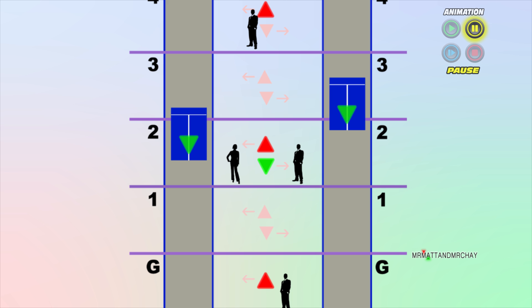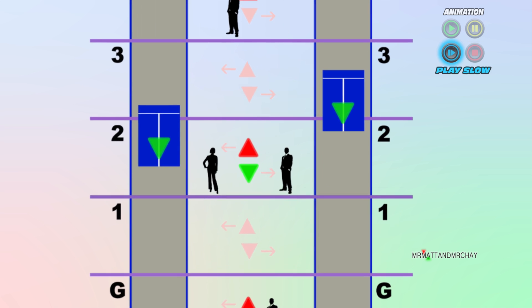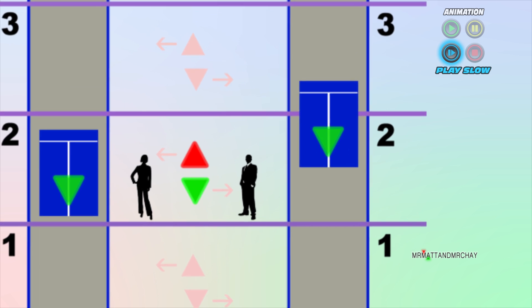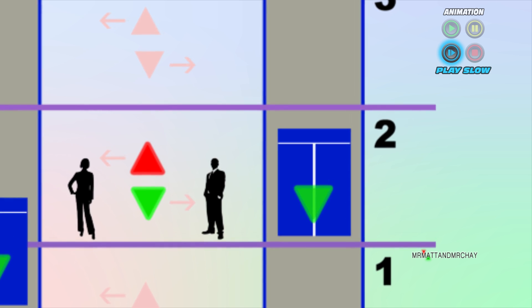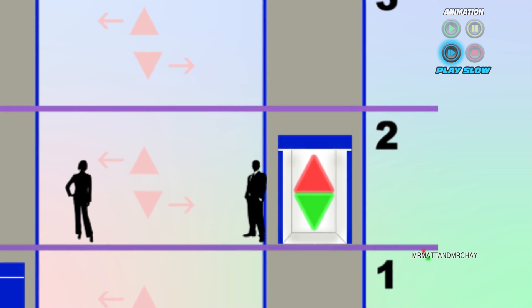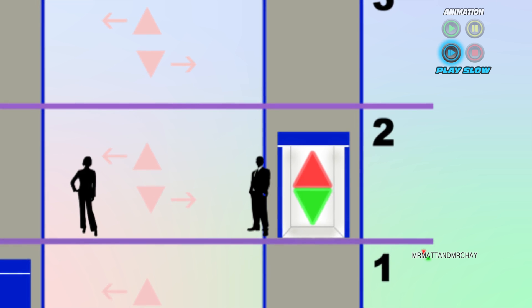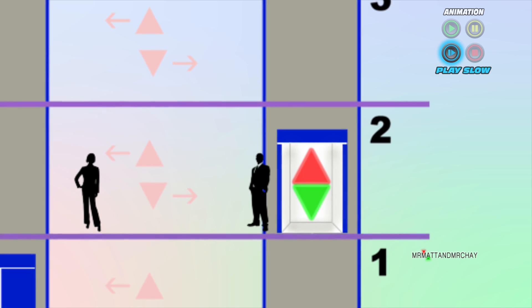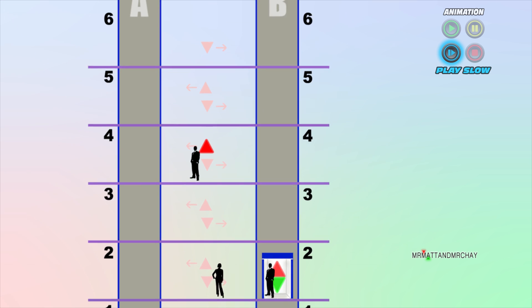As explained in part one, when an Otis lift gets to its destination, it doesn't care in which direction it goes next. This means that both up and down landing calls are cancelled at the same time. Two people enter, but the person going up gets into the car first, which gives the lift its direction.